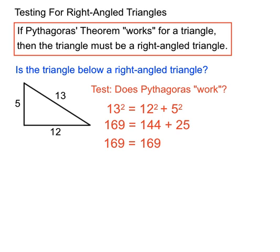So that ends up being 169 on the left hand side and 169 on the right hand side. So yes, the left hand side does equal the right hand side. So that illustrates to us that Pythagoras' theorem has worked for this particular triangle with these particular lengths.